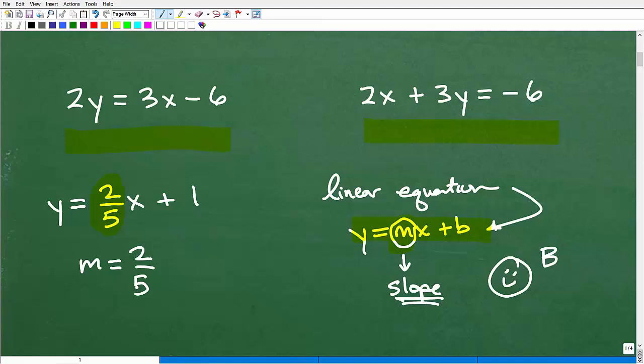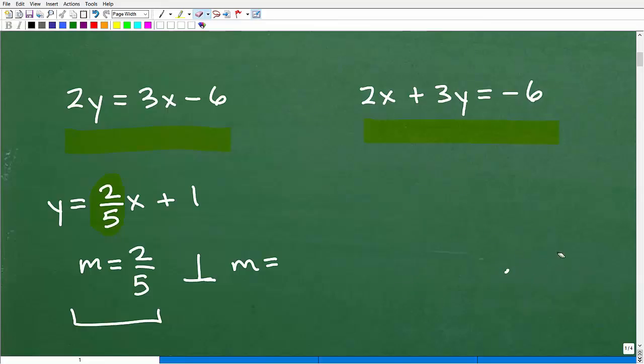There's a special relationship for this line and a line that will be perpendicular to it. Let's say this line is this way. Any line that's going to be perpendicular to it - and there's not just one line, you can have an infinite amount of lines that are perpendicular to this line - but all these lines will have a special relationship with this slope. The slope of this line, any line that is perpendicular to this line here, its slope is going to be the following.